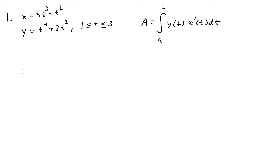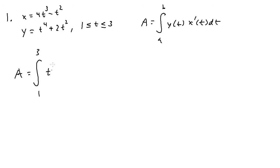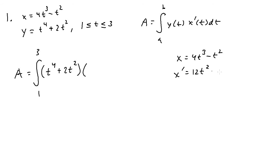We can go ahead and write out the integral. The area is the integral from 1 to 3 of y(t), which is t⁴ + 2t², times x'(t). We're given x, so we need to find x prime by differentiating. If x = 4t³ - t², then x' = 12t² - 2t. So we write that in, giving us the full integrand, dt. To evaluate this integral, we can just FOIL.